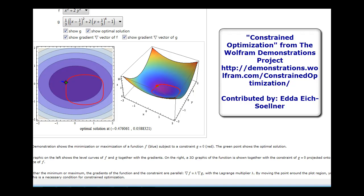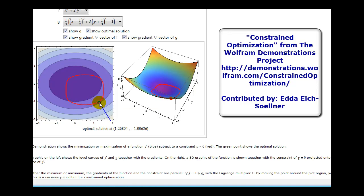The same thing occurs when we're looking for a maximum value. The maximum value is over here based upon the constraint in red, and as this point moves closer to that maximum, we'll see those two vectors — the gradients — become parallel once again. This is the idea behind Lagrange multipliers. Let's take a look at an example.